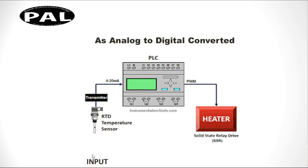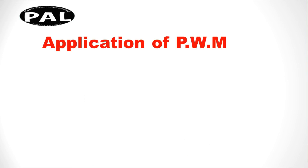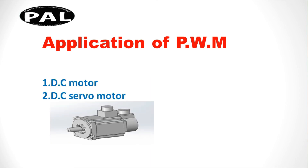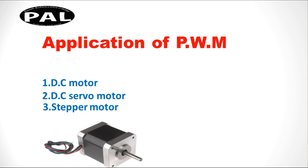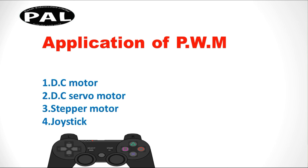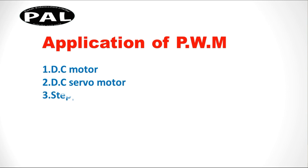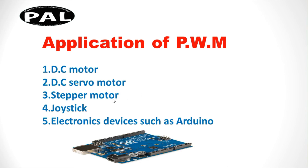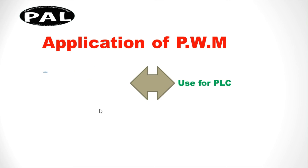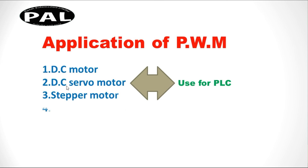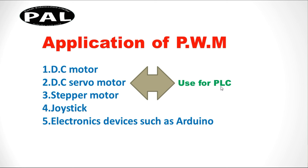This is the analog-to-digital converter with your input and your output. Applications of PWM: first is DC motor, second is DC servo motor, third is stepper motor, fourth is joysticks, and fifth is electronic devices and electronic circuits. DC motor, DC servo motor, and stepper motor are the main applicable sectors of PWM in the PLC sector. I hope you guys understand the main applicable sectors.